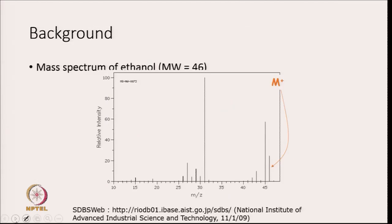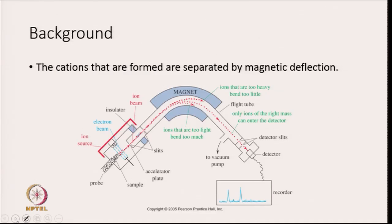This is the mass spectrum of ethanol, which has a molecular weight of 46. You can see the M+ ion peak here, and you can also get a peak at M−1. The cations that are formed are separated by magnetic deflection. The molecules are bombarded with an electron beam and ions are produced. This ion beam gets deflected in the magnet — ions that are too heavy bend too little, whereas ions that are too light bend too much, and only ions of the right mass can enter the detector. Once it enters the detector, the peak corresponding to that ion is recorded.